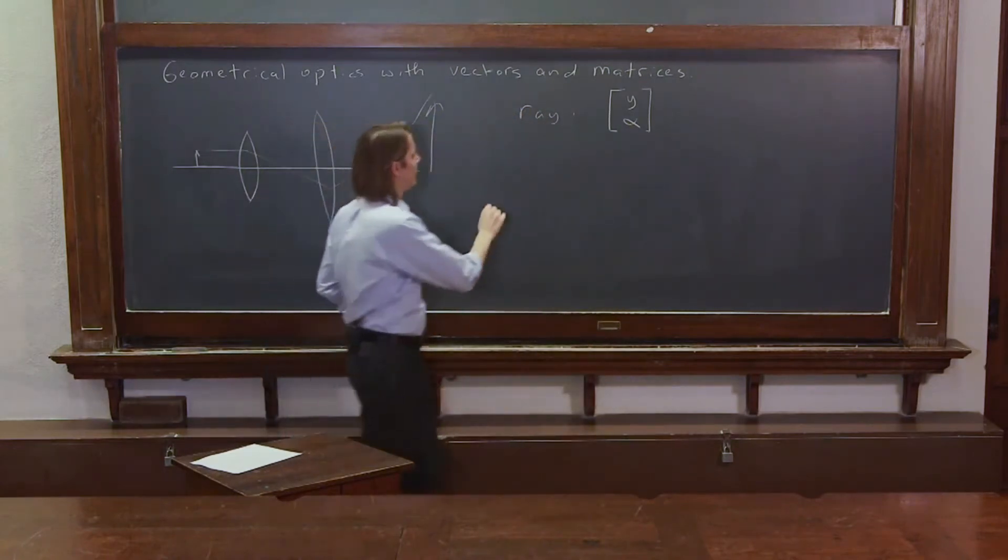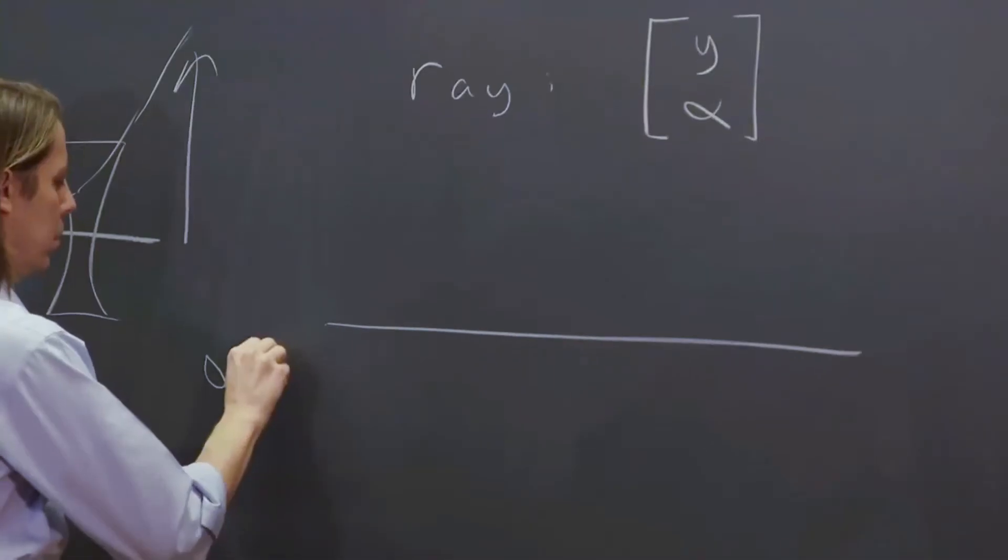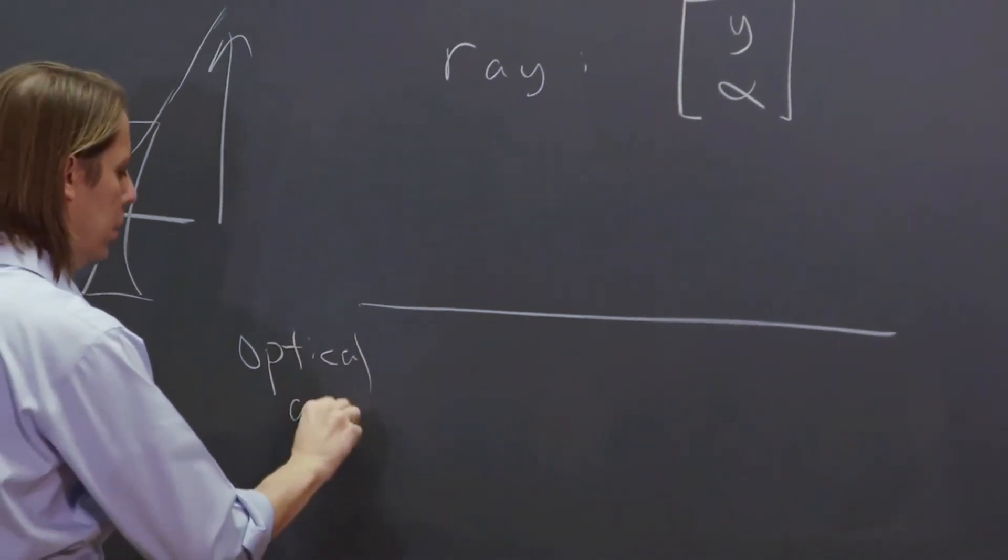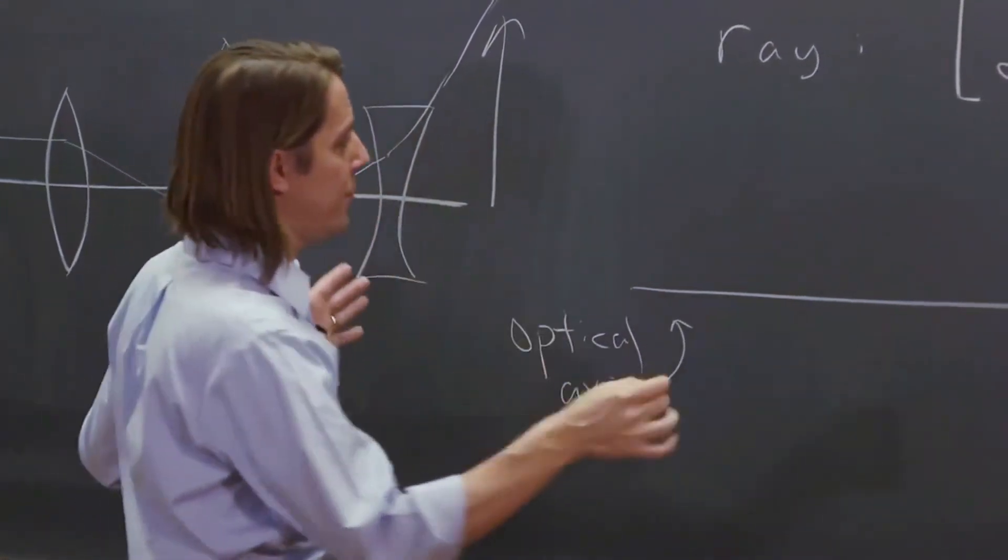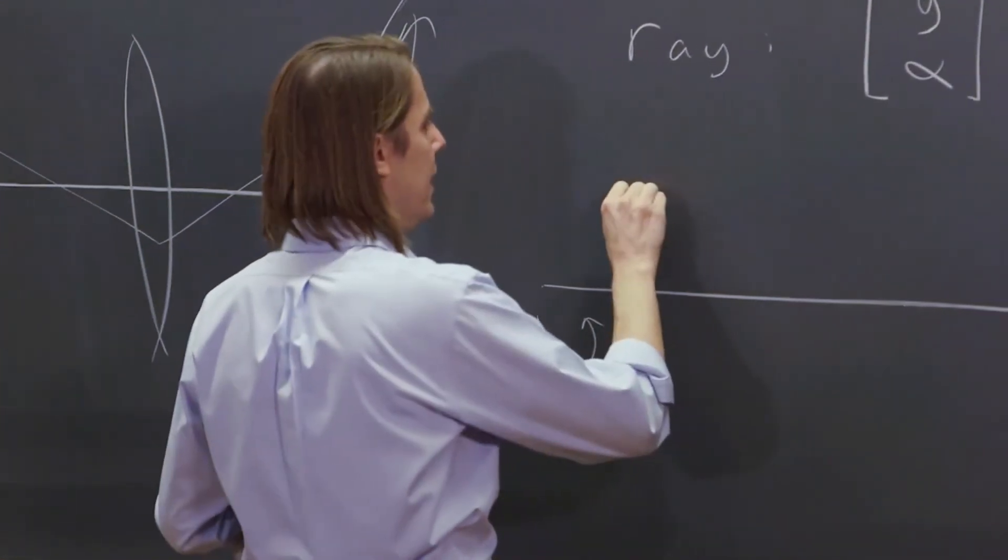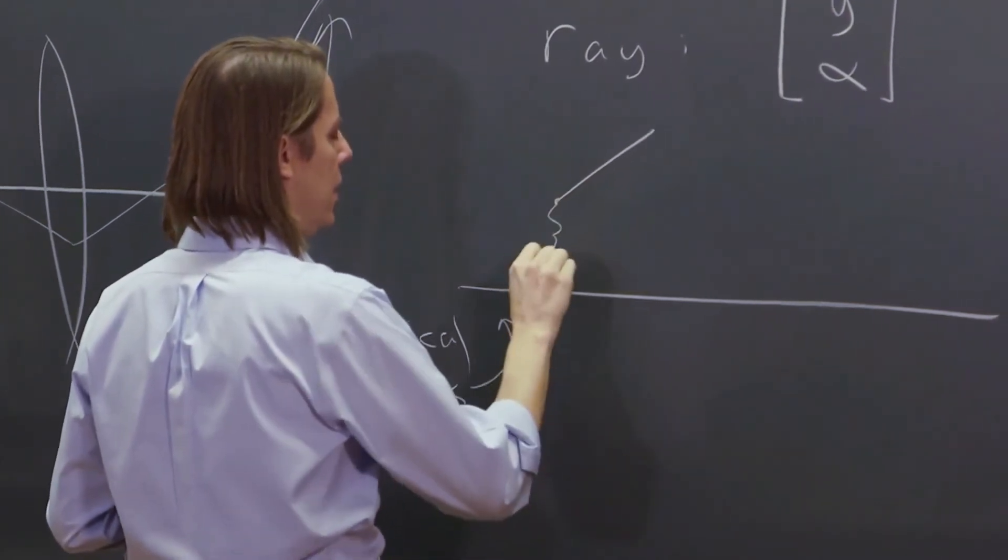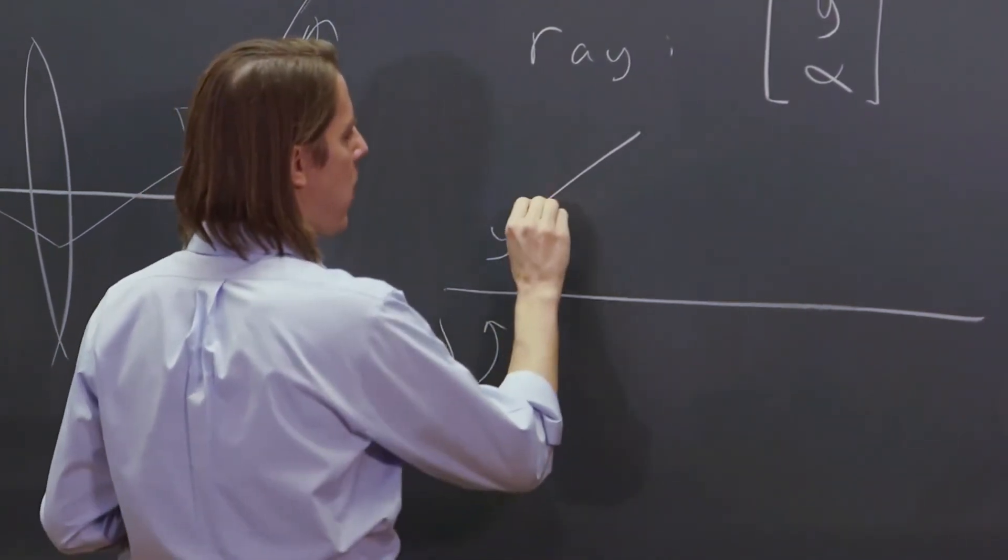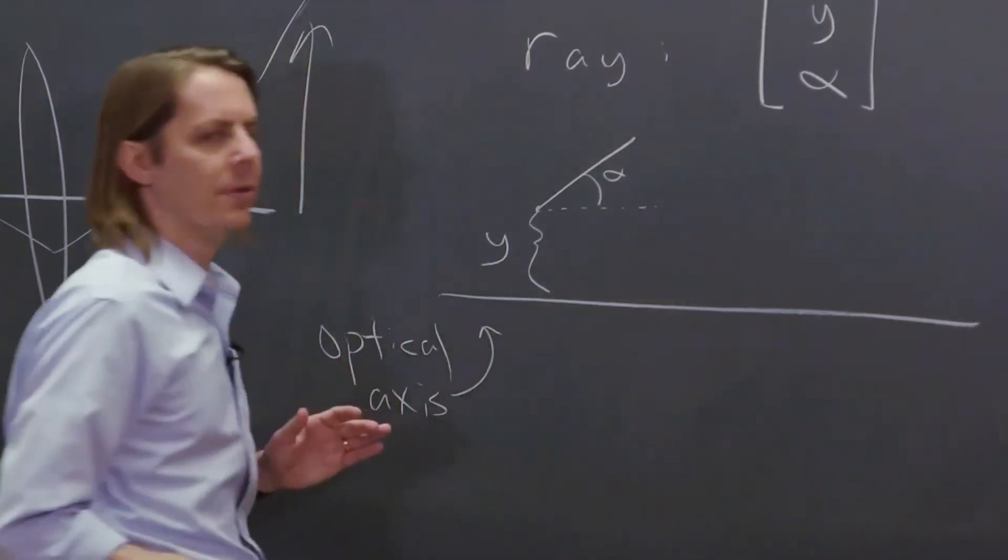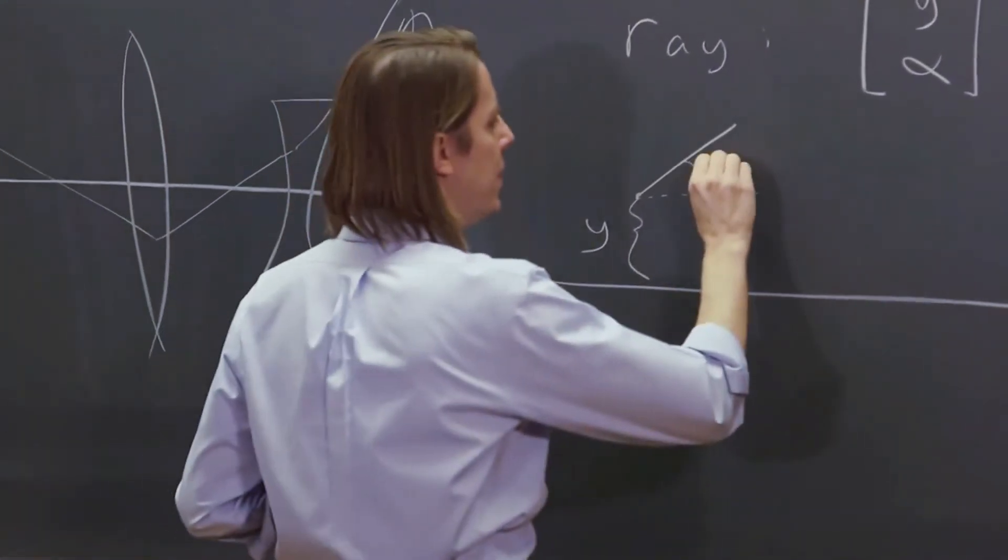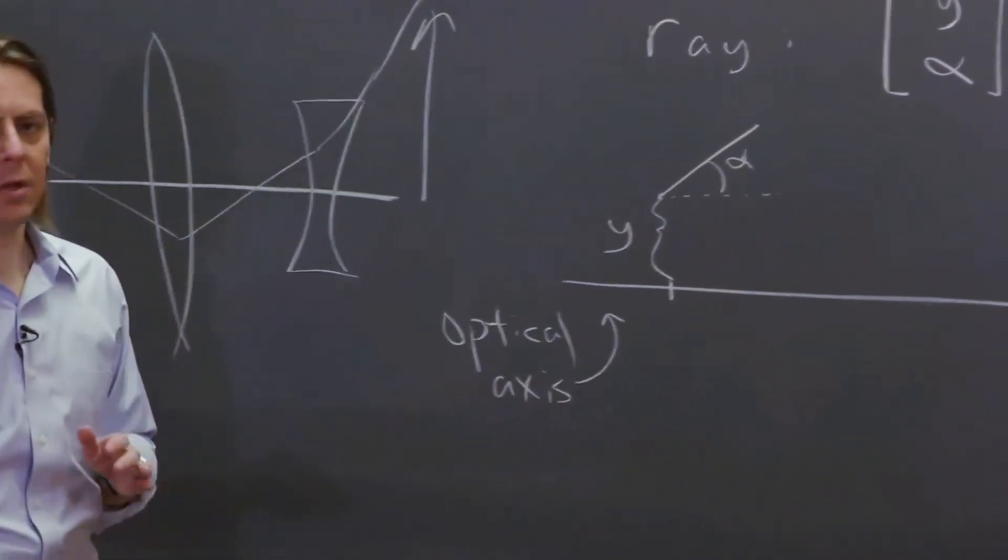And all that really means is if we have an optical axis here, and if we just have a ray anywhere with respect to this optical axis, say it's here and it's going like that, then this is Y. If you draw a line parallel to the optical axis, this angle is alpha. So that ray is characterized by Y and alpha at this point on the optical axis.